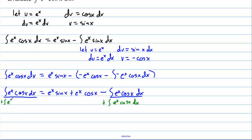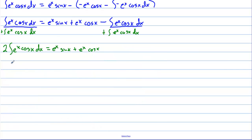Adding to both sides gives 2 times the integral of eˣ·cosine(x) dx equals eˣ·sine(x) plus eˣ·cosine(x). Multiplying both sides by one half, the final answer is: the integral of eˣ·cosine(x) dx equals (eˣ/2)·(sine(x) plus cosine(x)) plus C.